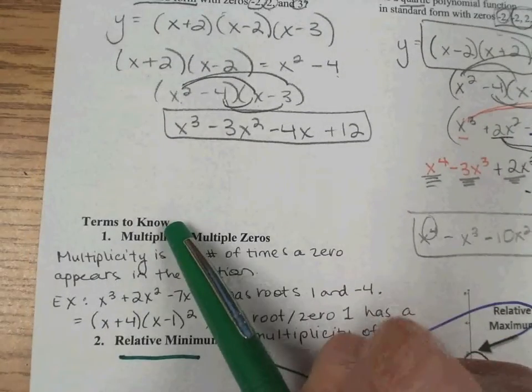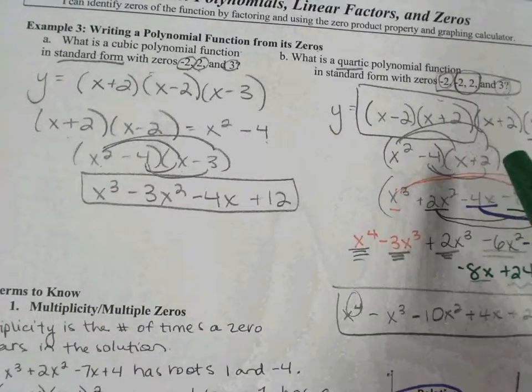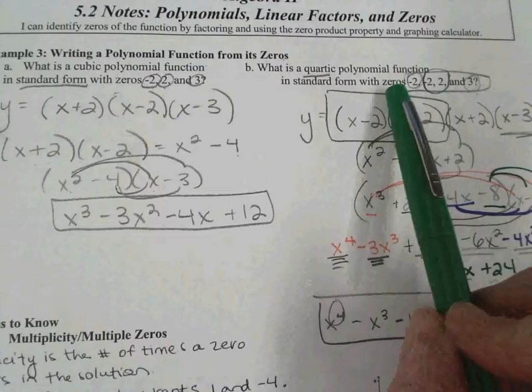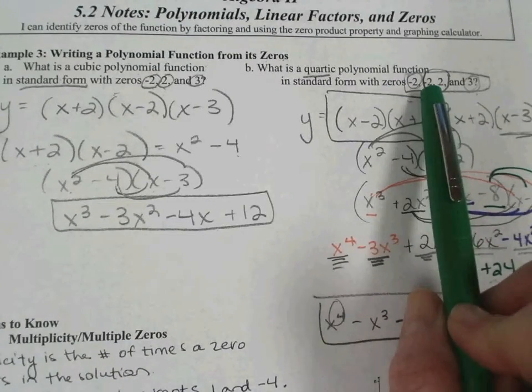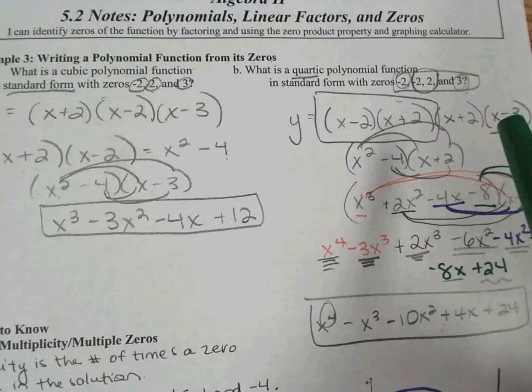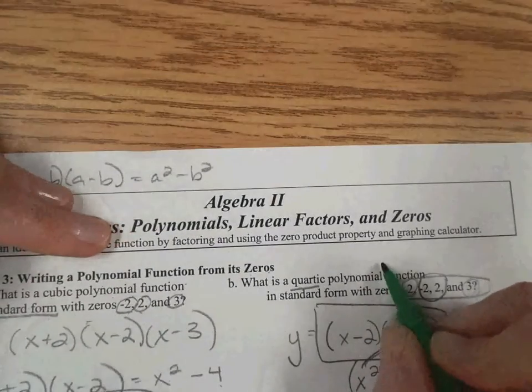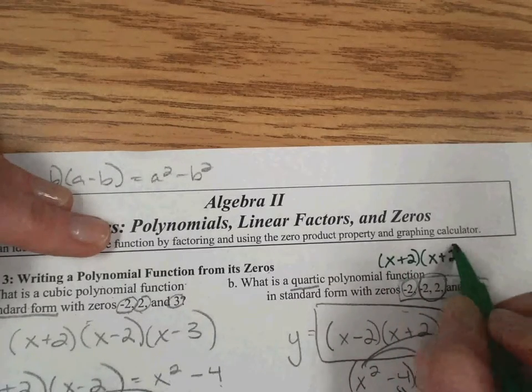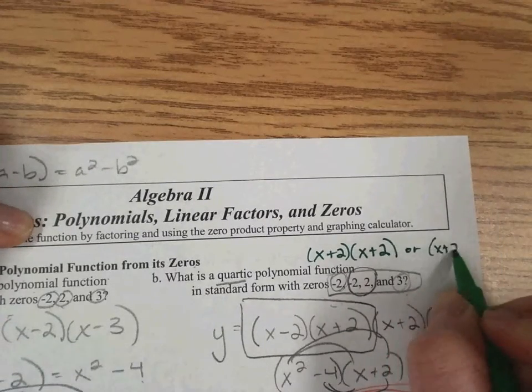All right, for a few terms that we should know, multiplicity is actually brought up here in example 3, part b, where we have two roots or two zeros that are the same. We have negative 2 mentioned twice, and you can see one way we could represent that would be to write that in factored form as x plus 2, x plus 2, or x plus 2 squared.